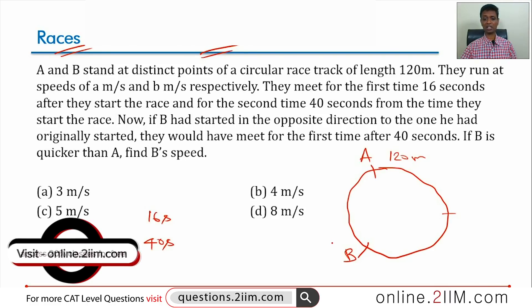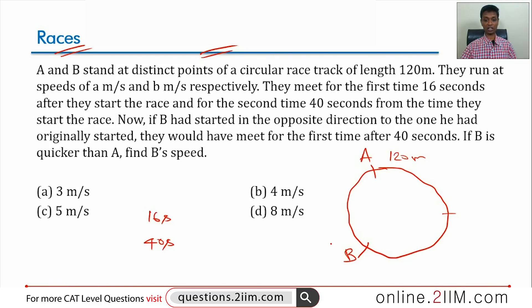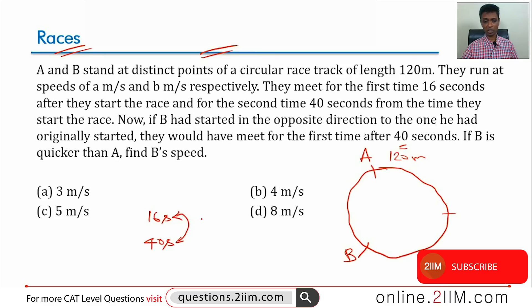Now if B had started in the opposite direction to the one he had originally started, they would have met for the first time after 40 seconds. It's a very important thing. Between 16 seconds and 40 seconds, this 24 seconds is how much time they take to cover the relative distance of one lap. From one meeting to another meeting is relative distance of one lap that takes them 24 seconds.